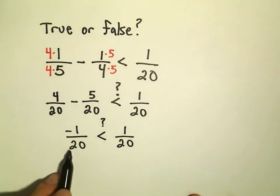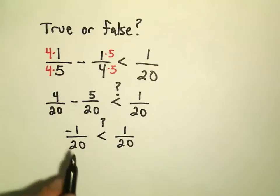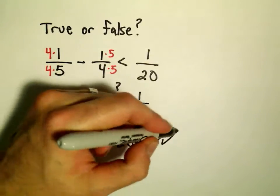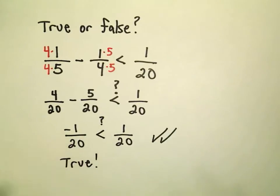Well, we have a negative over a positive. So the left side is definitely a negative number. The right side is a positive number. So certainly, negative 1 over 20 is going to be less than positive 1 over 20. So our original statement is, in fact, a true statement.